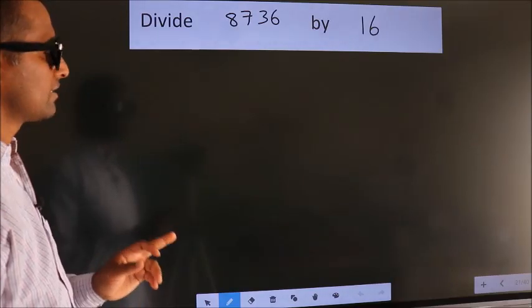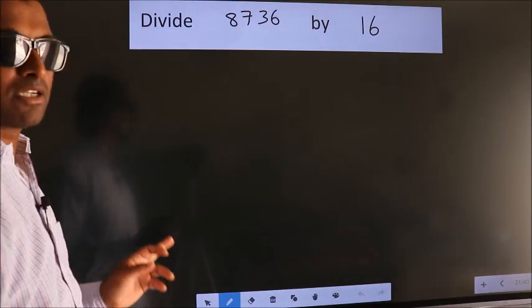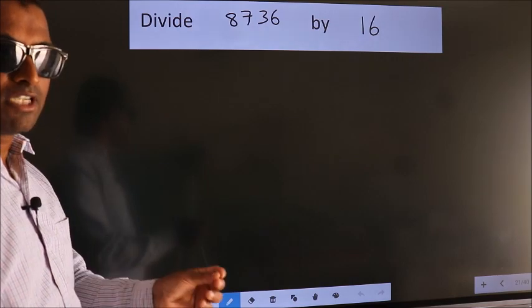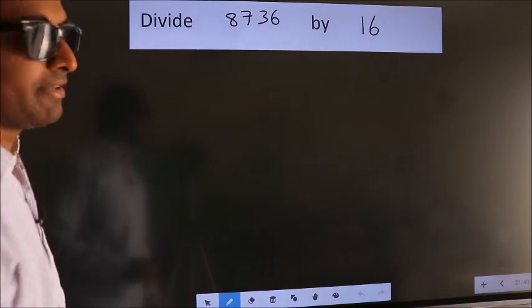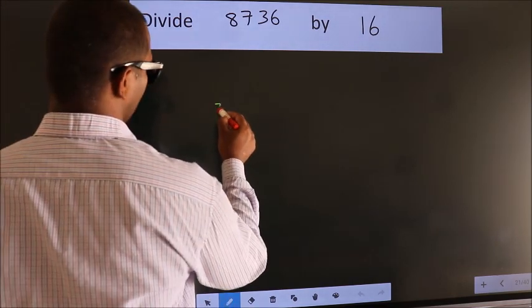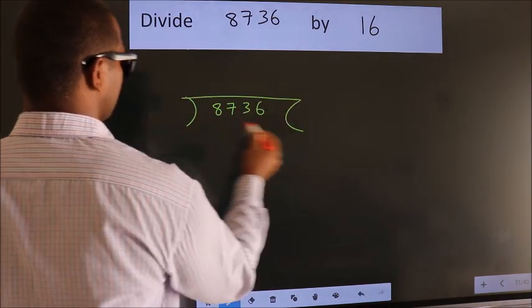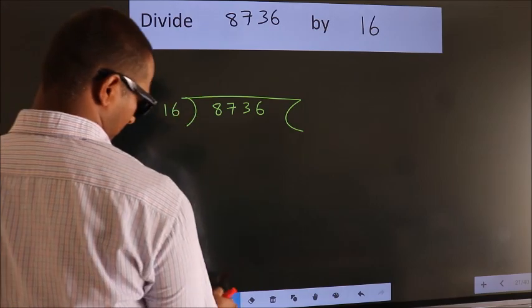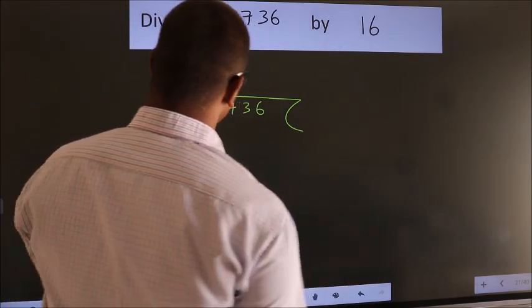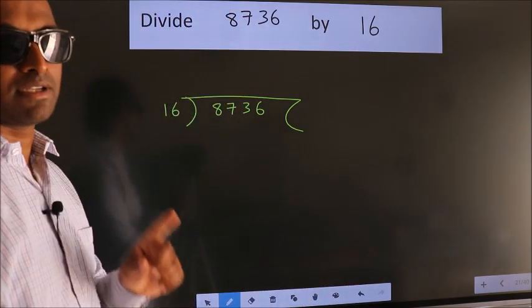Divide 8736 by 16. To do this division, we should frame it in this way. 8736 here, 16 here. This is your step 1.